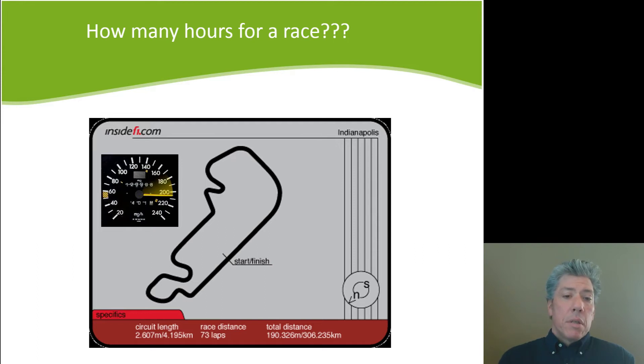73 laps for a total race and then a total distance of 306.235 kilometers or 190.326 miles. Well, my question is, this is great. How many hours is it going to take for me to sit here and watch this race? Well, we can't know it yet. We need to know an approximate or average speed of the car. So let's assume one, and from that data, we should be able to calculate the amount of time we're going to be sitting watching a race.